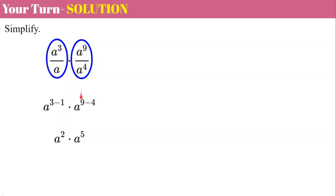Over here I have b to the nine minus four which is five, and when I add two plus five using the power product property I get a to the seventh. Now you could have also simplified the numerators first and added, so you would have had a to the twelfth over a to the fifth and twelve minus five is seven.